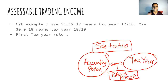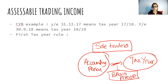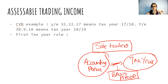Now let's look at CYB — Current Year Basis. For all businesses, we use CYB. Like, you're doing business, you've prepared your SOPL, and you want to know in which tax year to show it. So what you do is use CYB.